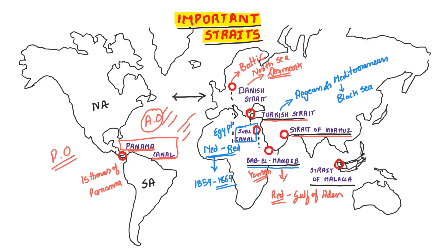Next is the Strait of Hormuz. This connects the Persian Gulf and the Gulf of Oman. This is the Strait of Hormuz.